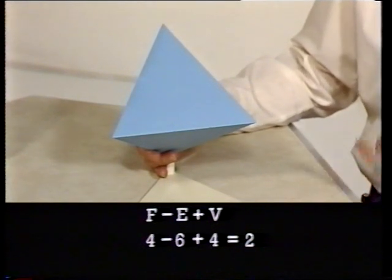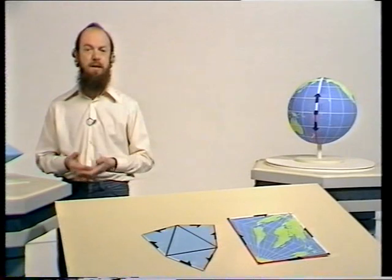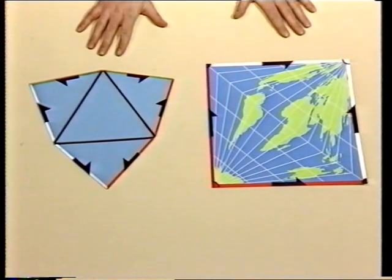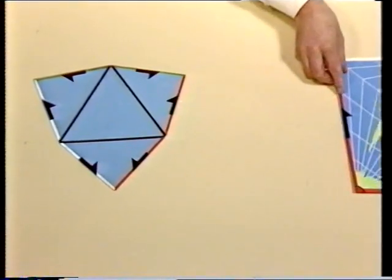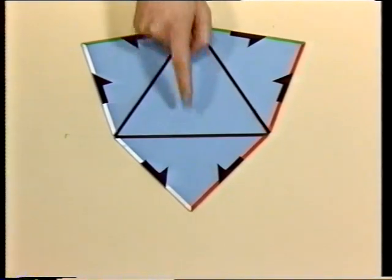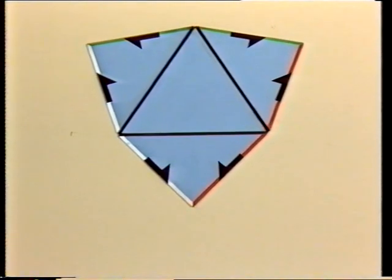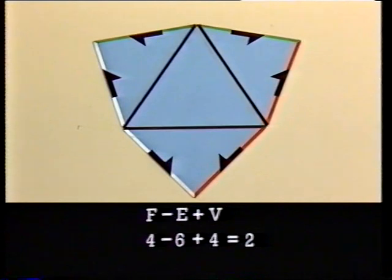I won't do it for the cube — you can try it for yourself afterwards. What I want to get onto straight away is how we generalise the Euler characteristic to surfaces other than polyhedra. It's very simple. All we do is take a flat representation of our surface and count faces, edges and vertices in it. For the sphere we've seen two flat representations. Let's try the hexagon first. Now we've got these three interior edges to take into account as well as the six exterior edges.